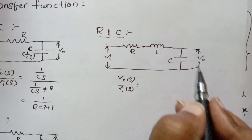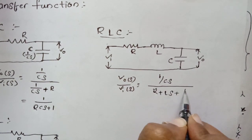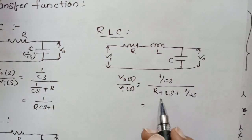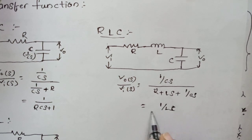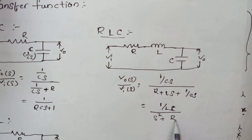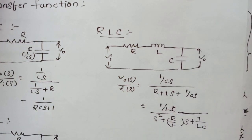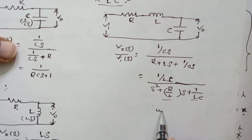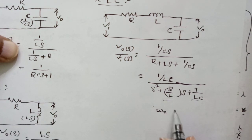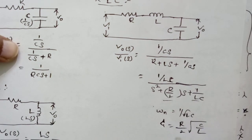The shunt element here is 1/Cs, divided by total impedance: R + Ls + 1/Cs. Simplifying, we get (1/LC) divided by [s² + (R/L)s + 1/LC]. This is the final equation for the RLC network. Here the natural frequency omega_n equals 1/√(LC), and the damping ratio zeta equals R/2 × √(C/L).